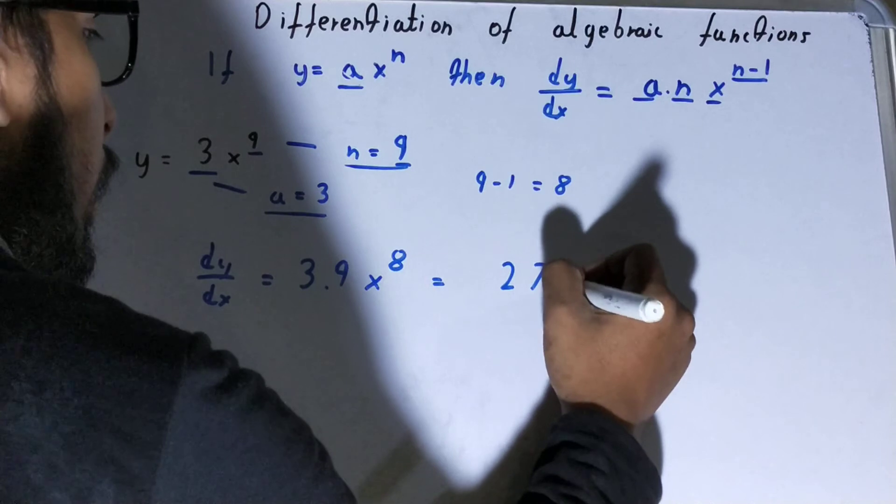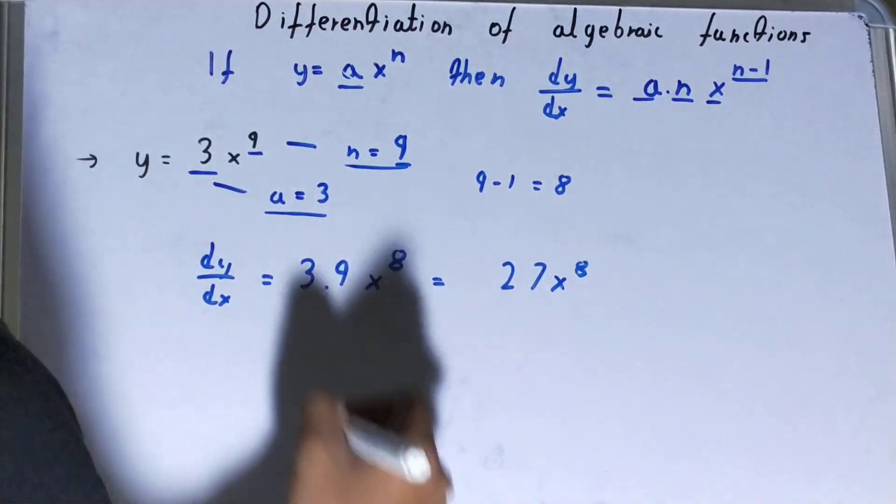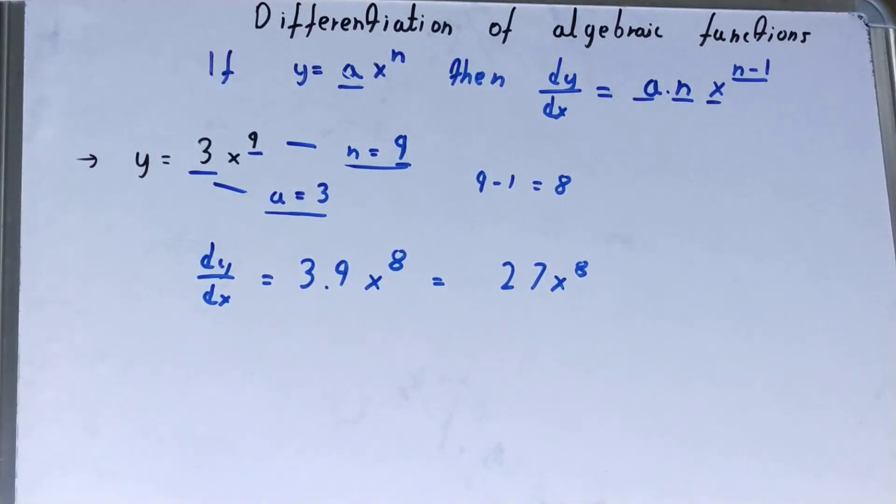So our answer will be 3 times 9 equals 27, x raised to 8. See, this easily you can solve the differentiation of algebraic functions if you do it very carefully.